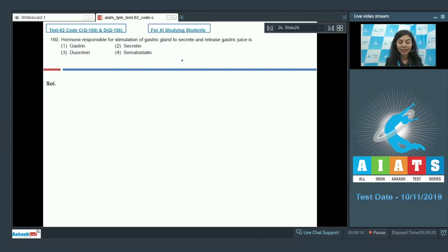Question 160: Hormone responsible for stimulation of gastric gland to secrete and release gastric juice is gastrin, secretin, duocrinin, or somatostatin? Gastrin stimulates the gastric glands to release gastric juice, whereas secretin promotes the release of bicarbonates in the pancreatic juice, increases the secretion of bile, and decreases the gastric secretion and motility.